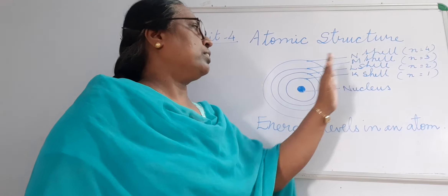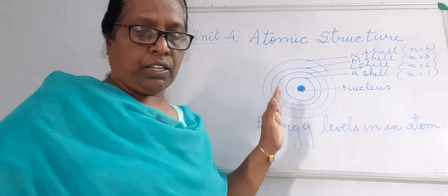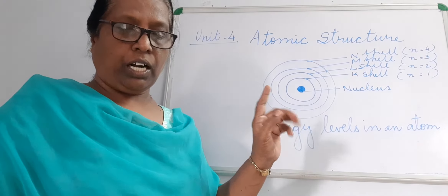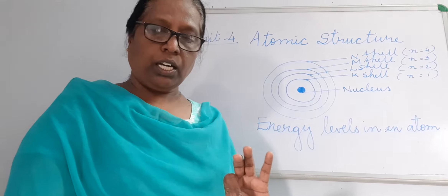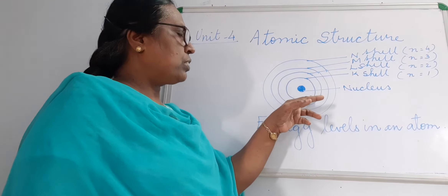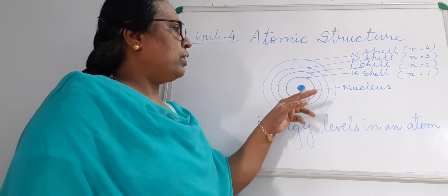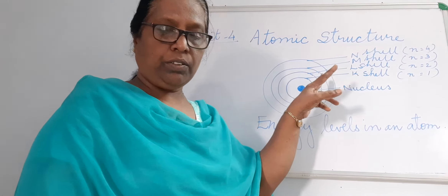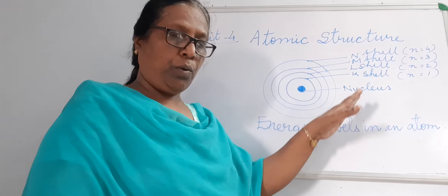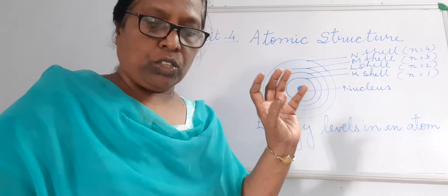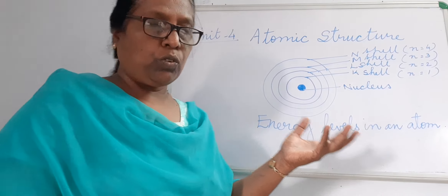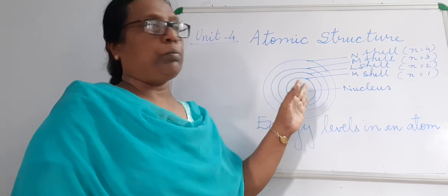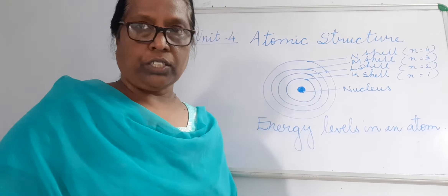As shells increase, the energy also increases. When an electron jumps from one energy level to another, energy is emitted or absorbed in the form of a bundle of energy called quanta, or photon energy. Quantum or photon — the energy emitted when one electron jumps from one shell to another shell.